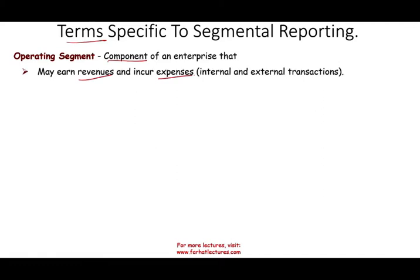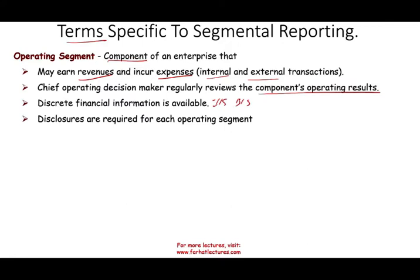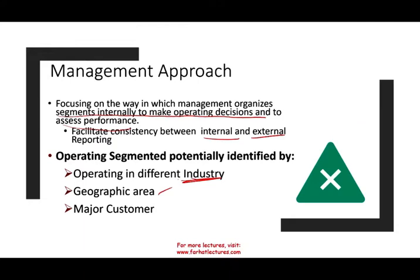Let's look at terms specific to segmental reporting. An operating segment is a component of an enterprise — just like Frito-Lay is a component of PepsiCo — that might earn revenue and incur expenses, both internally and externally. The chief operating officer makes decisions on a regular basis to review each component's operating results. It has discrete financial statements — its own income statement, balance sheet, and cash flow statement — and disclosures are required for that division. An operating segment is essentially a small business that stands on its own, which can be in a different industry, geographical area, or represent a major customer.